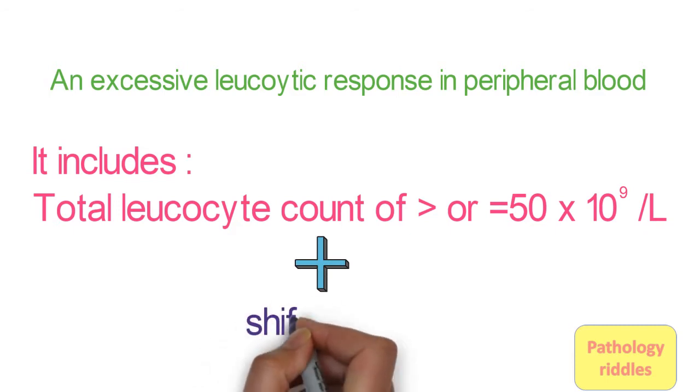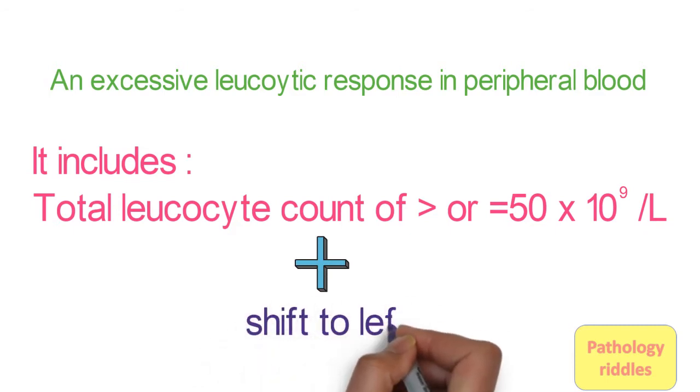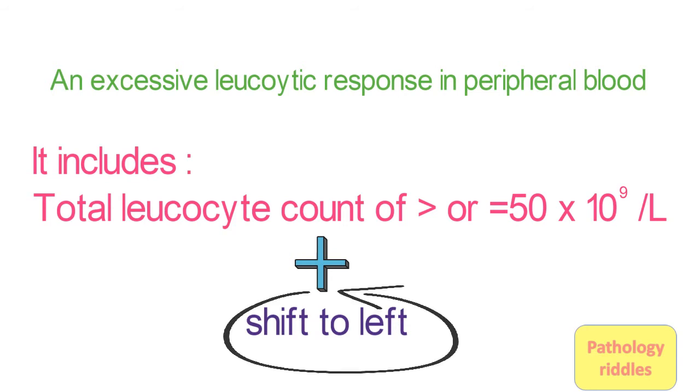Along with this, there will be shift to left. Shift to left means all the precursors of the WBCs will be in the peripheral blood. In case of neutrophils, there will be band forms, metamyelocytes, myelocytes, and so on.